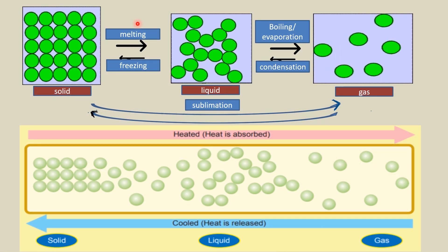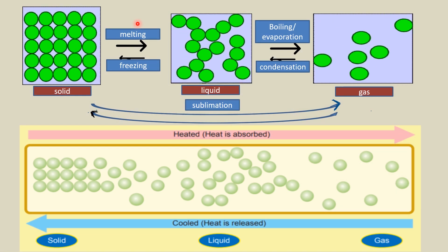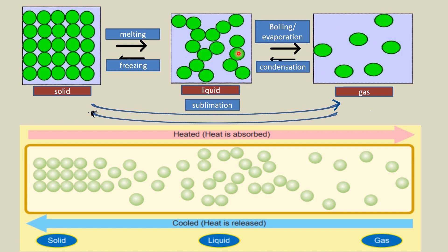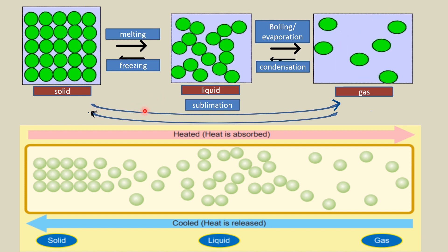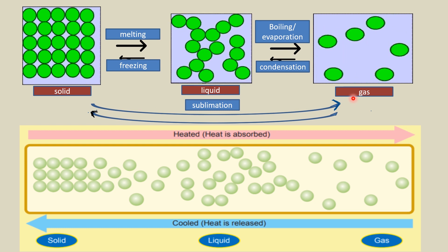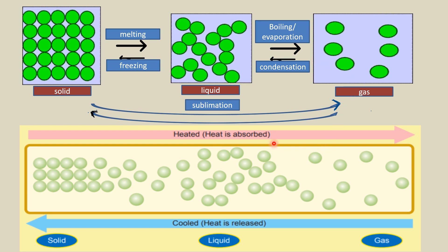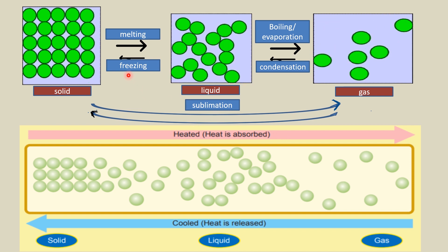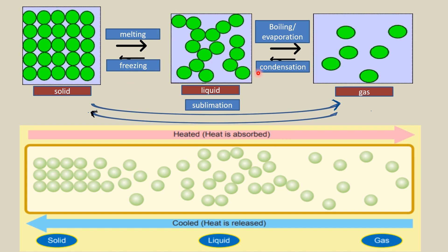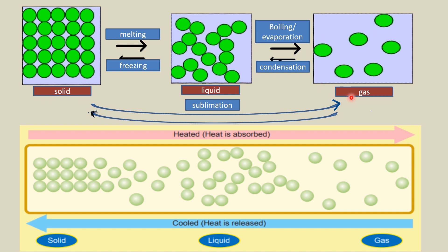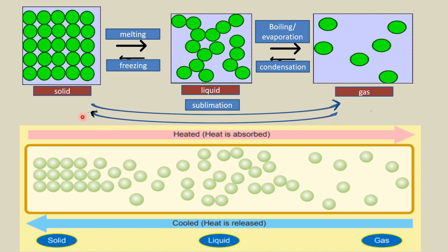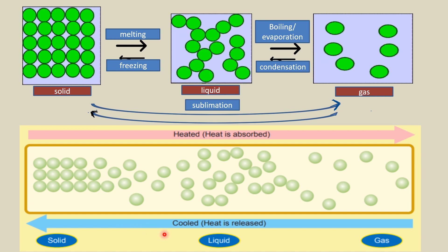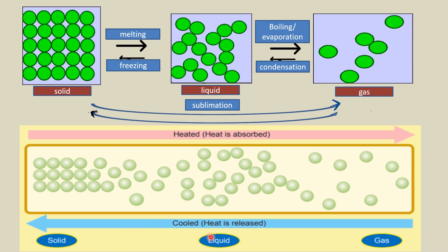Let's make a conclusion on what we have learned. Melting, boiling, evaporation, and sublimation from solid to gas are processes that involve heat absorption. Freezing, condensation, and sublimation from gas to solid are processes that happen when heat is released to the surroundings.